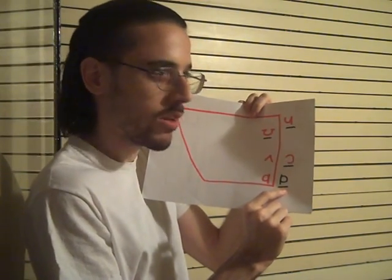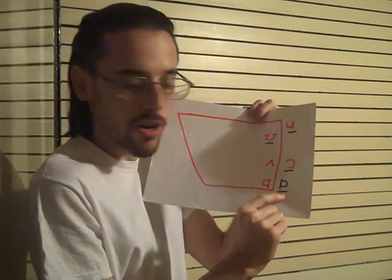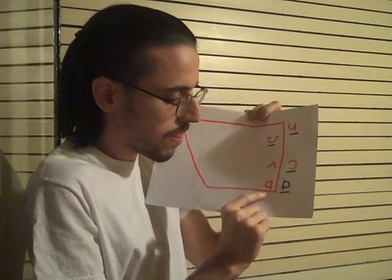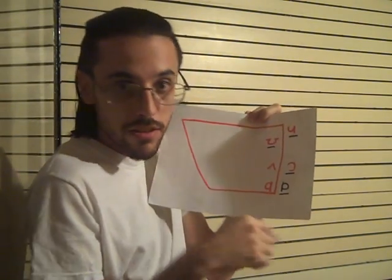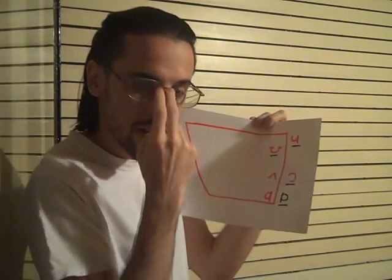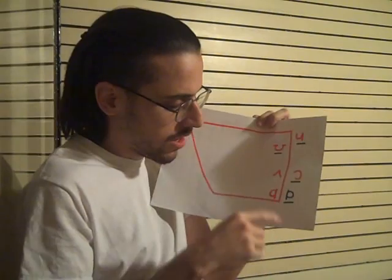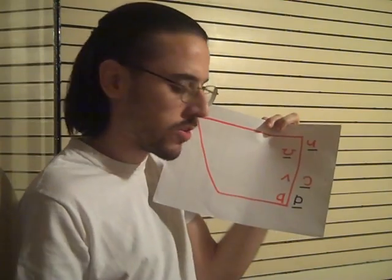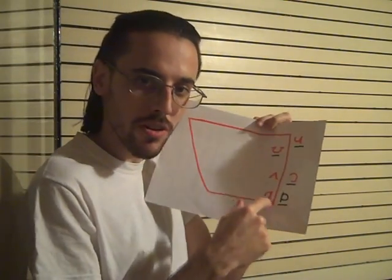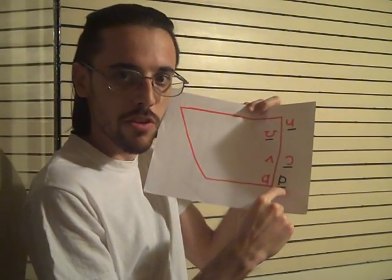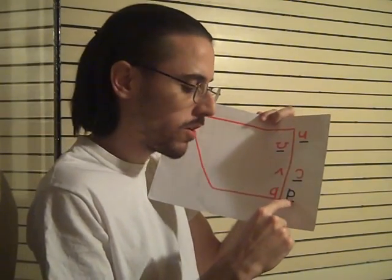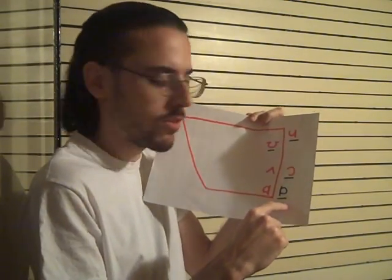In Received Pronunciation (RP), the extra phoneme is found in the word 'lot.' In General American, 'lot' sounds just like 'father' — same vowel. But in RP, 'father' corresponds to the open unrounded vowel, and 'lot' has a rounded vowel. RP is also non-rhotic, so the R in 'father' is dropped.